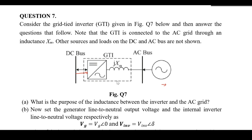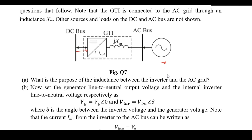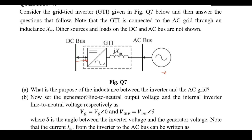Make sure that your grid-tie inverter and the utility company have some compatibility. Now let's look at the problem. The first question says: what is the purpose of the inductance between the inverter and the AC grid? As you can see, between the inverter and the AC bus there is an inductor with reactance Xm.